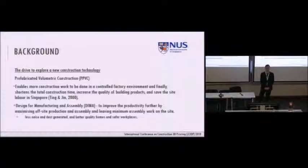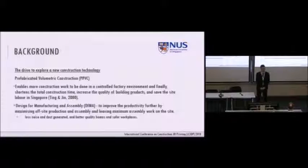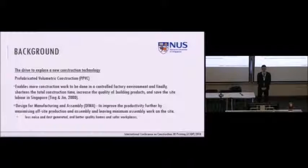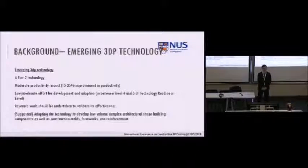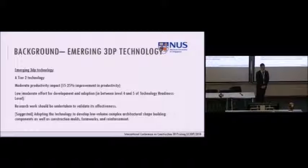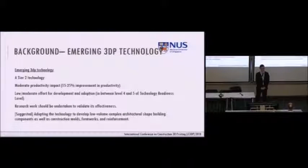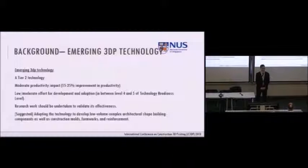This may lead you to think about prefabrication. The 3D printed formwork will be serving as one of the roles in prefabrication, both on-site and off-site. With this prefabrication, there will be several advantages: less noise and dust generated, better quality homes, and safer workplaces. The third drive for this technology is immersion in 3D printing. 3D printing technology has been classified as Tier 2 technology, which means moderate productivity impacts with 15 to 20% improvement in productivity. Research should be undertaken to validate its effectiveness. It's suggested by the BCA to adopt this technology to develop low-volume volumetric architecture shapes, building components, as well as construction modes, formworks, and reinforcements.